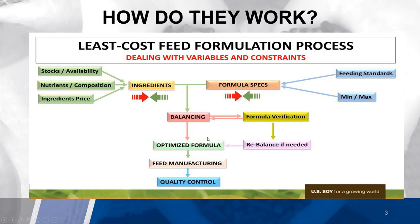If everything checks out fine, it comes back as an optimized formula, and then it comes down to feed manufacturers — the mill will go ahead and manufacture the feed. The last step is quality control, where some companies take samples from the finished product to determine if the formula needs any adjustments and make sure they are putting out a product they are comfortable representing their brand.